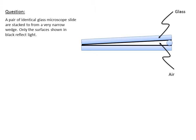A pair of identical glass microscope slides are stacked in a very narrow wedge. The way we're going to create this wedge, we're going to put a small piece of dowel rod, something about the size of your pencil there. Only the surfaces shown in black will have a reflecting coating on them. This surface right here and this surface in here will have a reflecting coating on it.